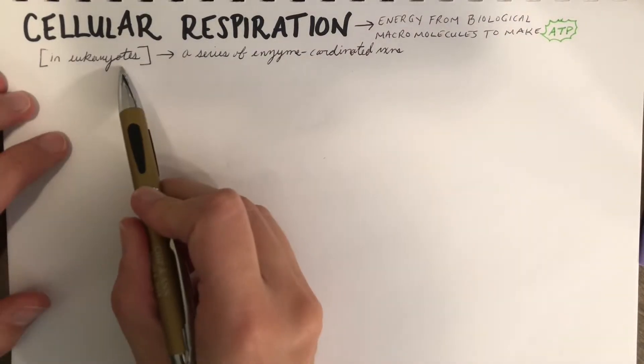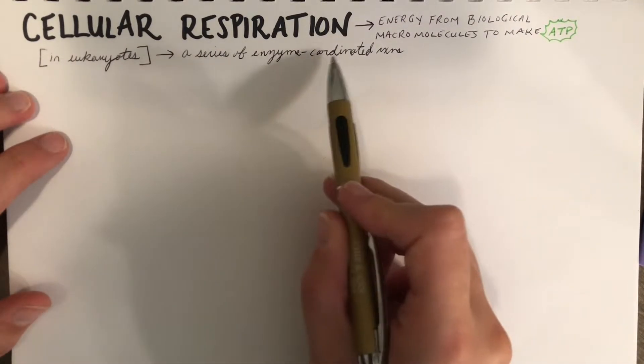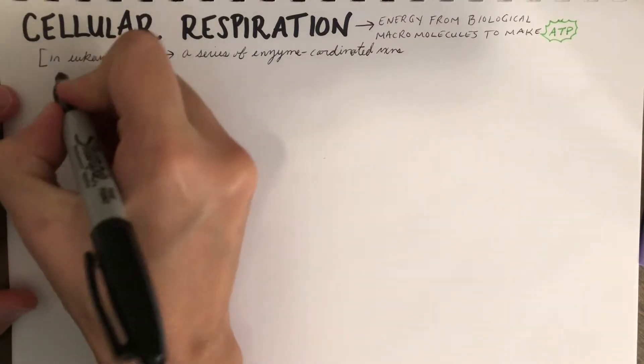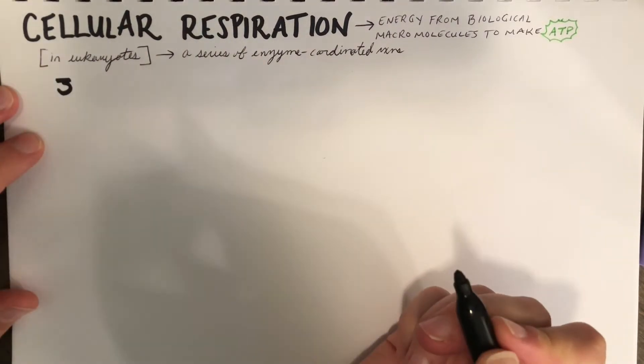In eukaryotic organisms, cellular respiration involves a series of enzyme-coordinated reactions. And there are three main steps that we're going to go over today.